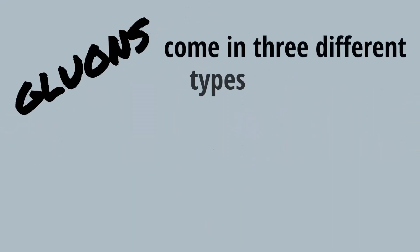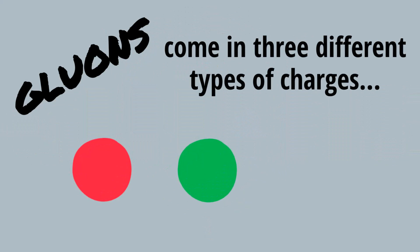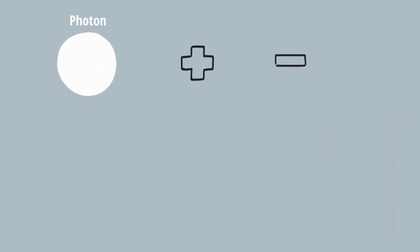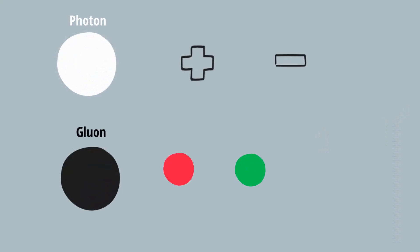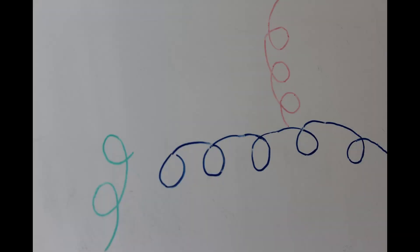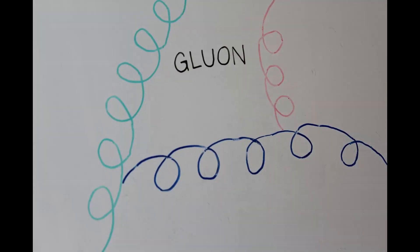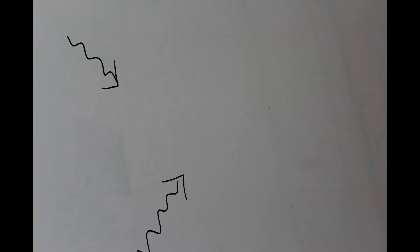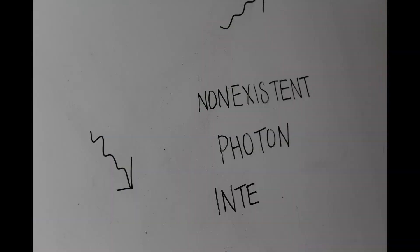Gluons come in three different types of charges: red, green, and blue. These names do not refer to actual color — color charge names only exist for distinction. Just as photons can have a positive or negative charge, gluons can have a red, green, or blue charge. When gluons pass between quarks, the gluons are able to interact with each other because of their color charge, unlike photons emitted by electrons, which are completely oblivious to each other.